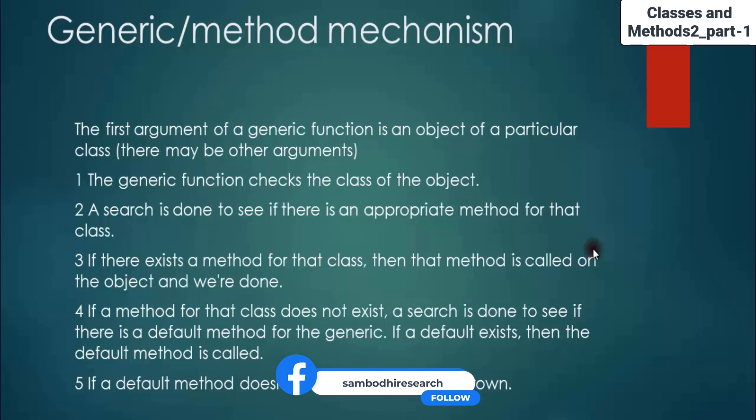If there exists a method for the class, then that method is called on the object and we are done. If a method for the class does not exist, a search is done to see if there is a default method for the generic. If a default exists, the default method is called. If the default method is not there, then an error is thrown.